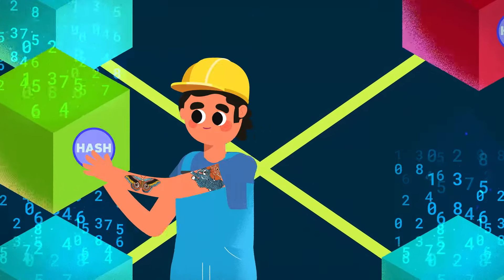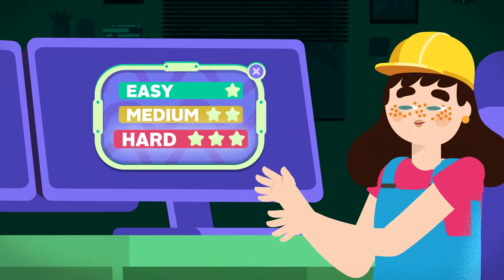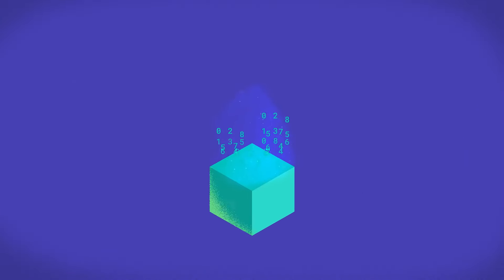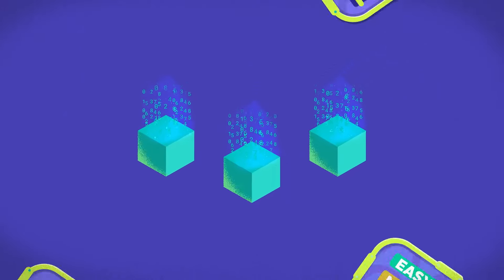And the first miner to output a valid hash successfully mines the block and wins the reward. And the guessing game starts all over again. This difficulty imposed on miners would also adjust up or down automatically based on factors such as total network hash rate and miner participation.